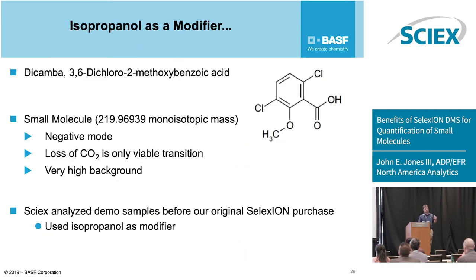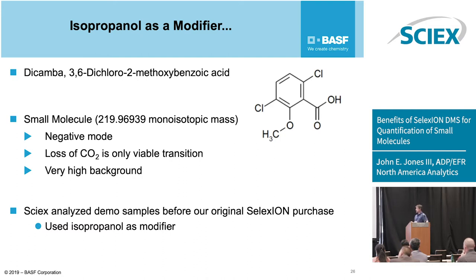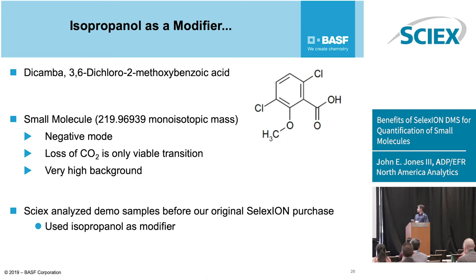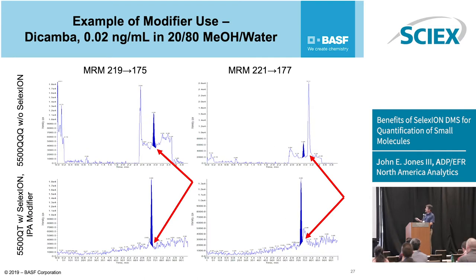We had one example where we used isopropanol as a modifier — this is dicamba. It's a small molecule that runs in negative mode, and the only viable transition is the loss of CO2. It has a very high background, and we actually had SCIEX demo this before we bought our original SELEXION because we thought we might need to do more field trials. You can clearly see that we can even go lower with this standard — down to 0.02 nanograms per mL.